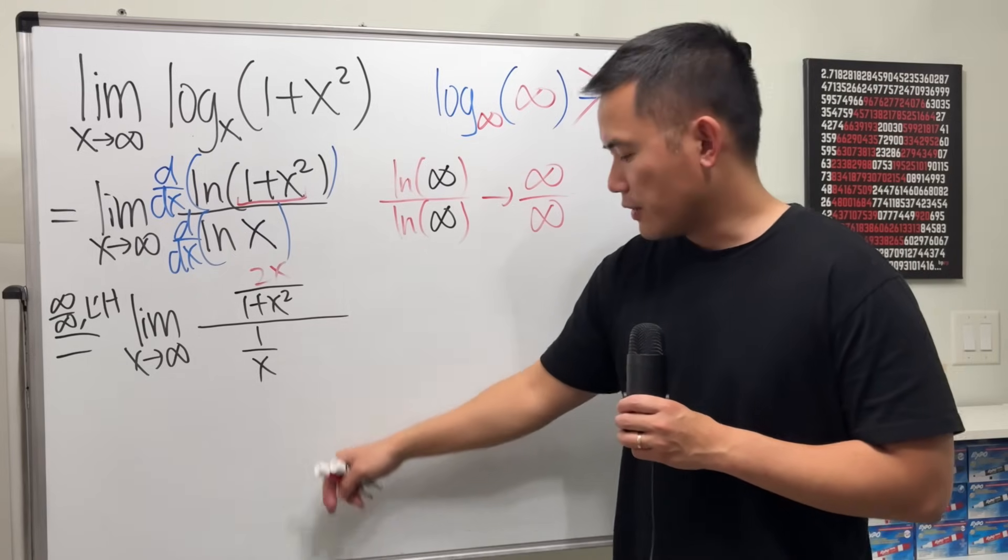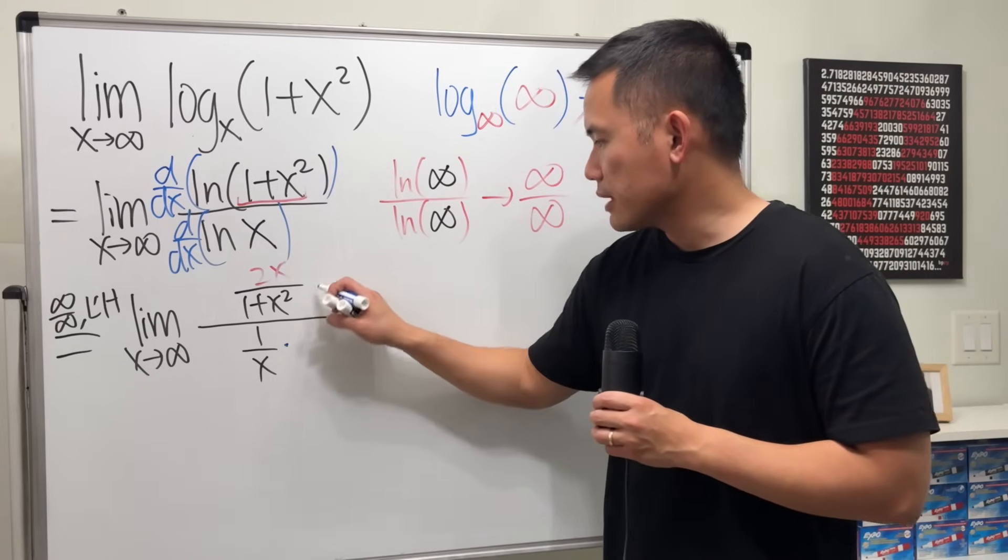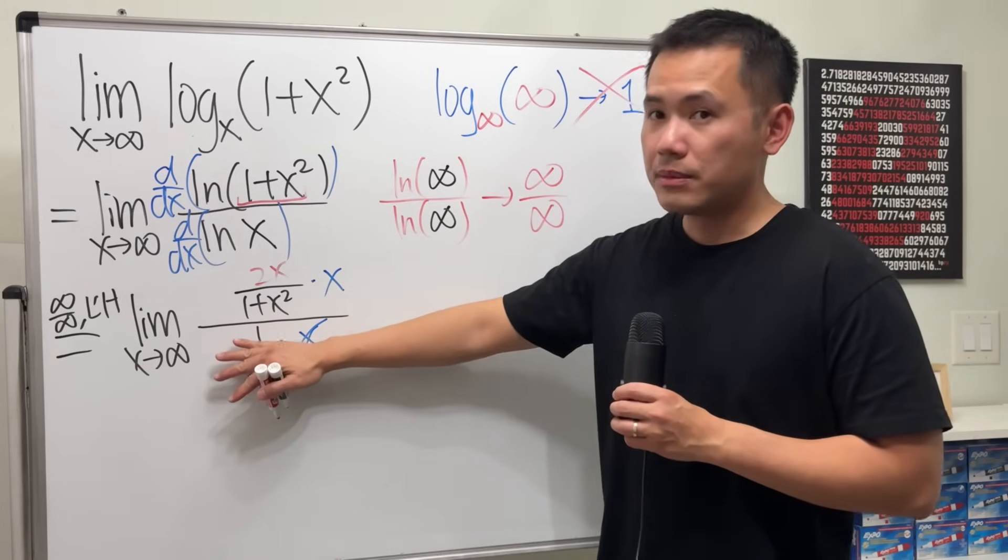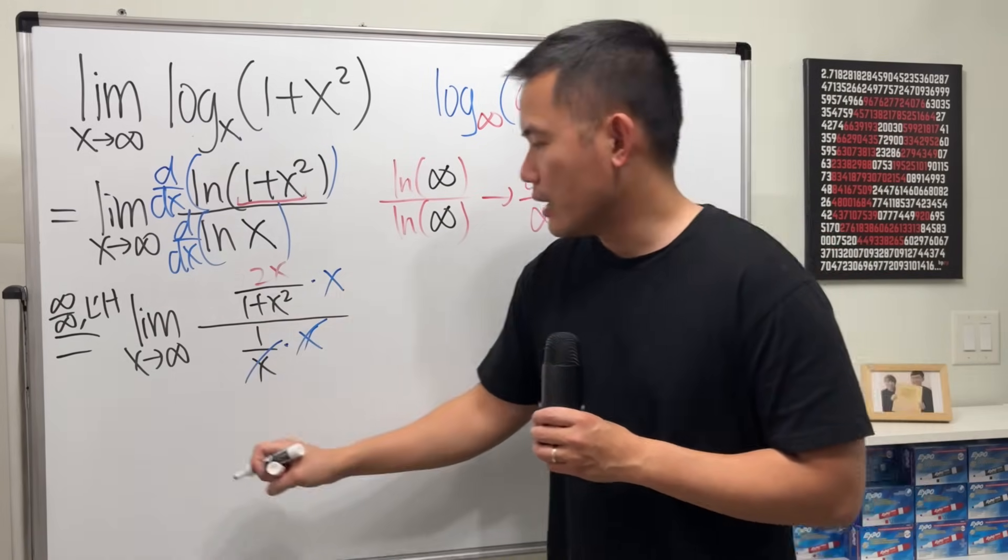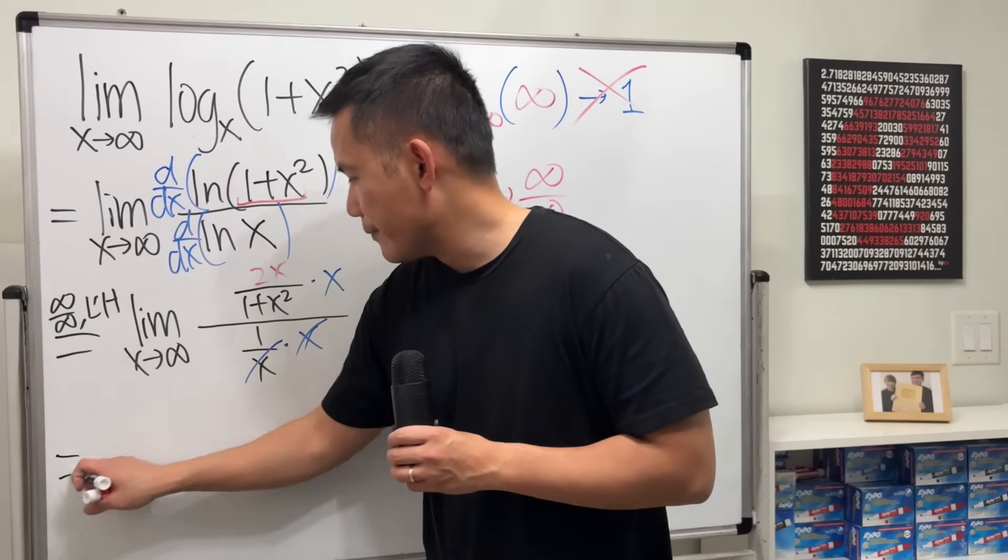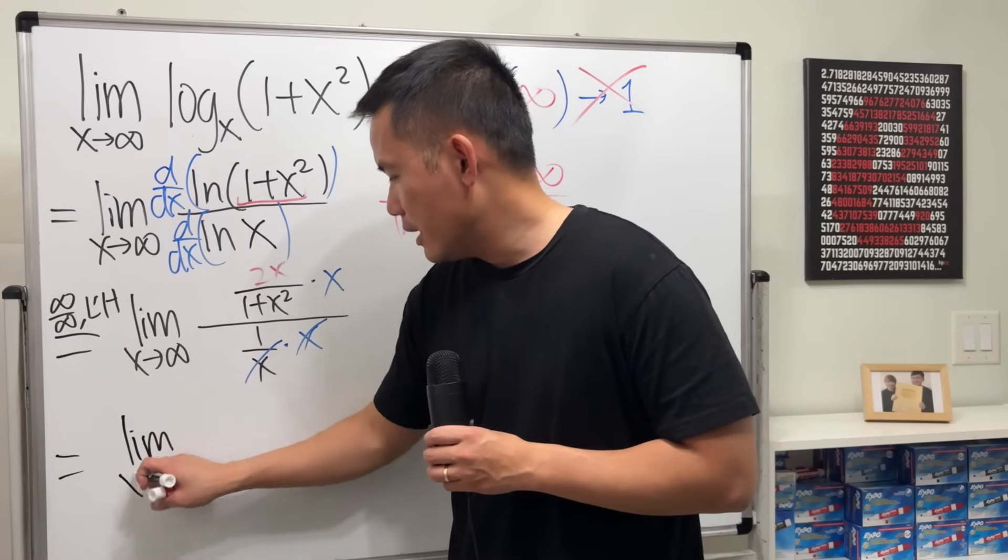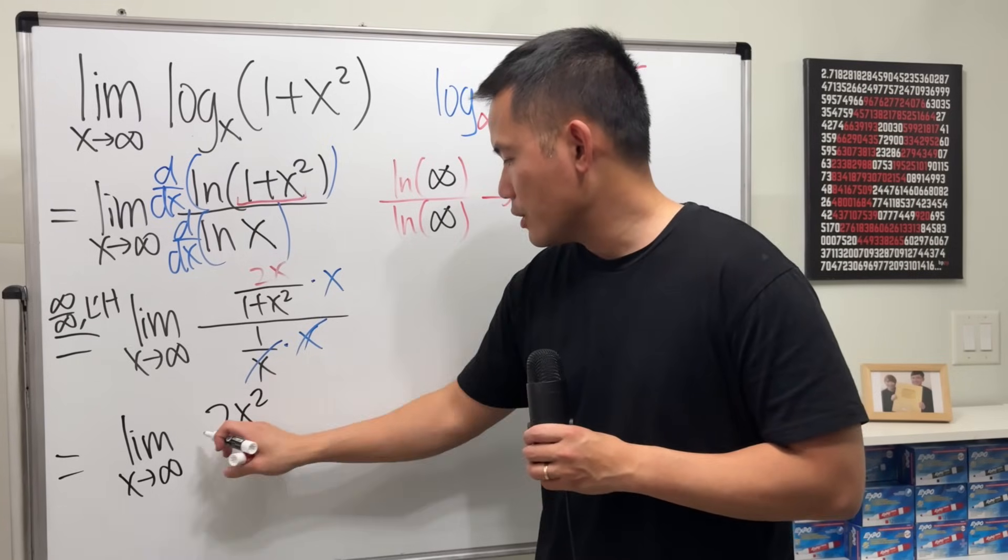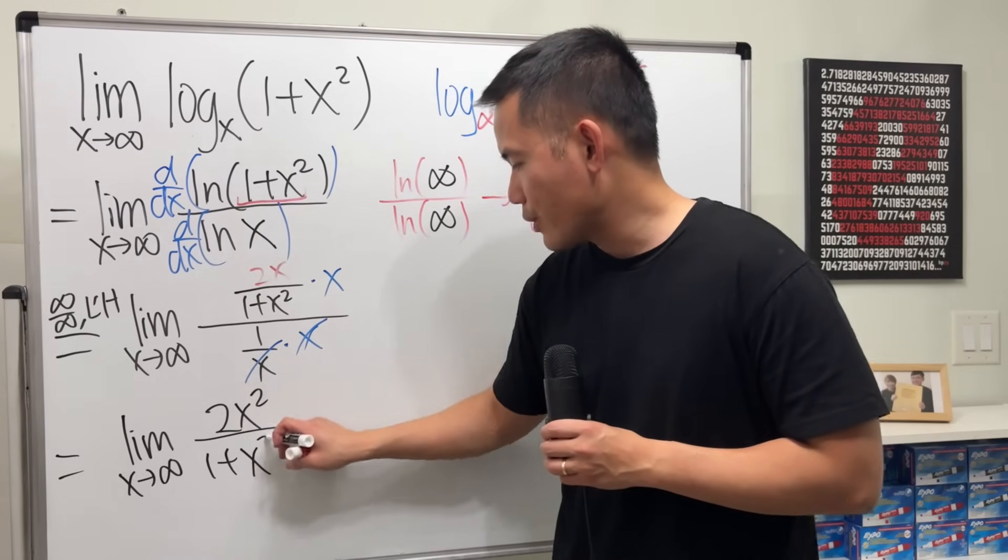Now, to simplify this a little bit, we can multiply the top and bottom by x so that they cancel. So the bottom is just 1, and we have x squared on the top with the 2, of course. So this is the limit as x goes to infinity of 2x squared over 1 plus x squared.